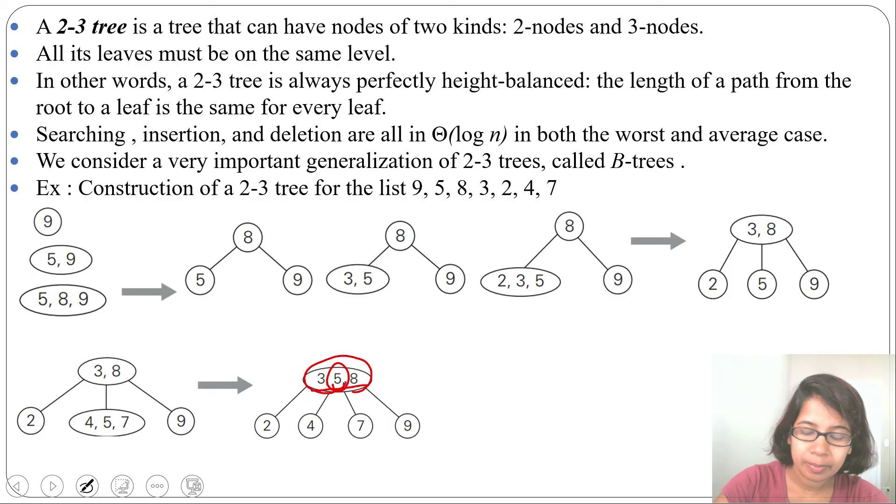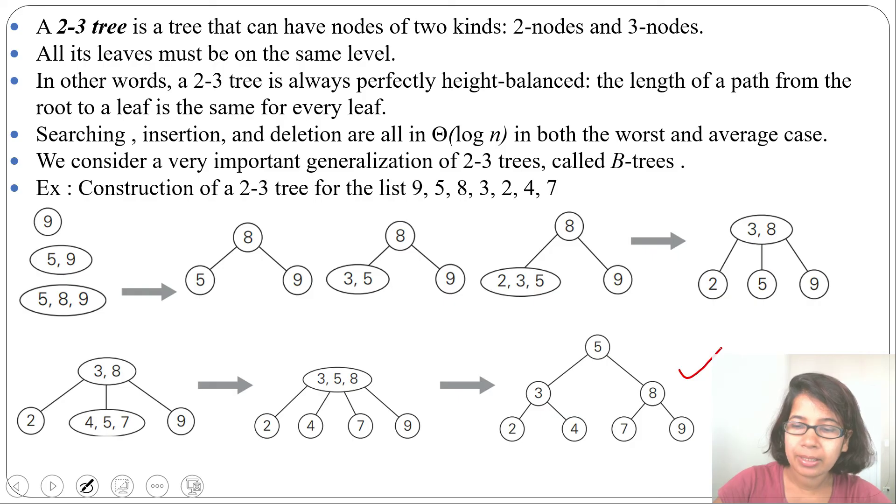So this 5 will be again parent. 5's children will be 3 and 8. 3's children are 2 and 4. 8's children are 7 and 9. So it is a binary search tree plus it is a complete binary tree and it is a 2-3 tree. Left child is less than parent, right child is greater than parent.